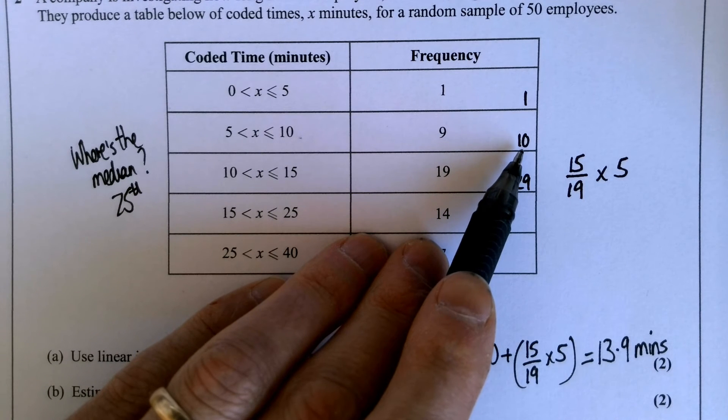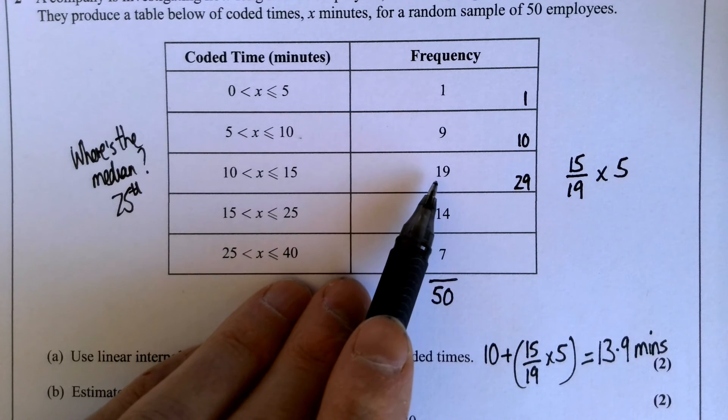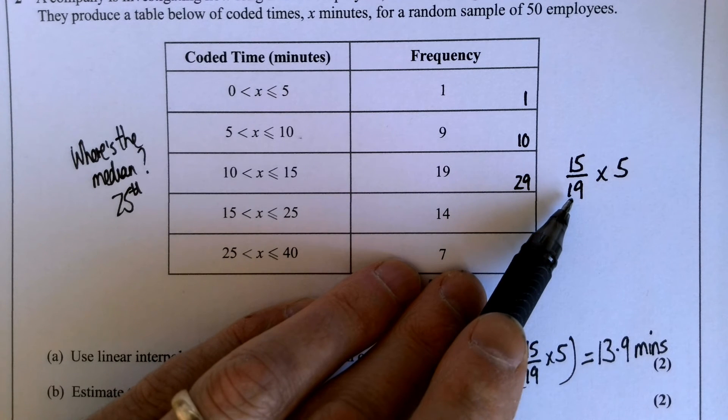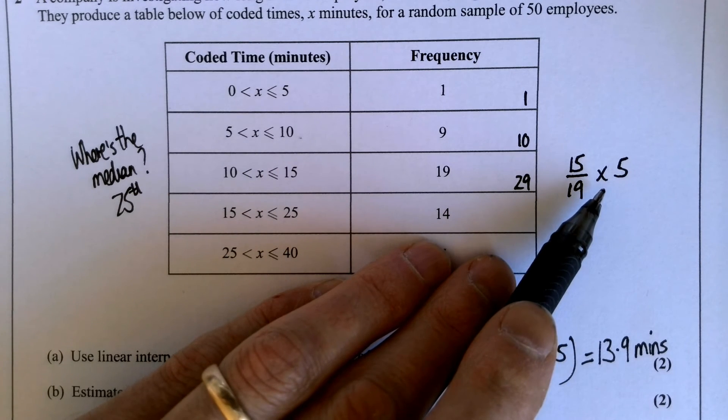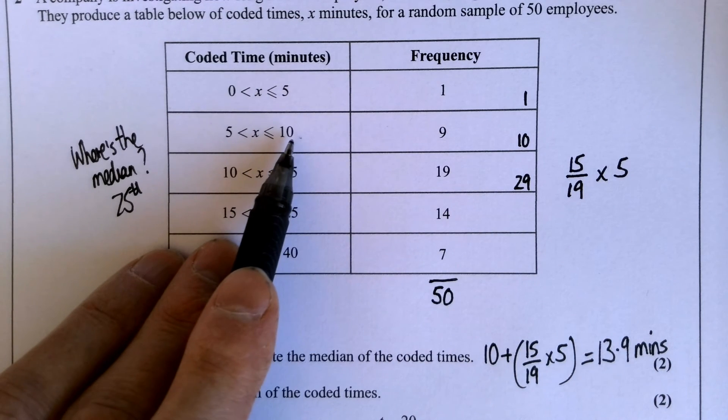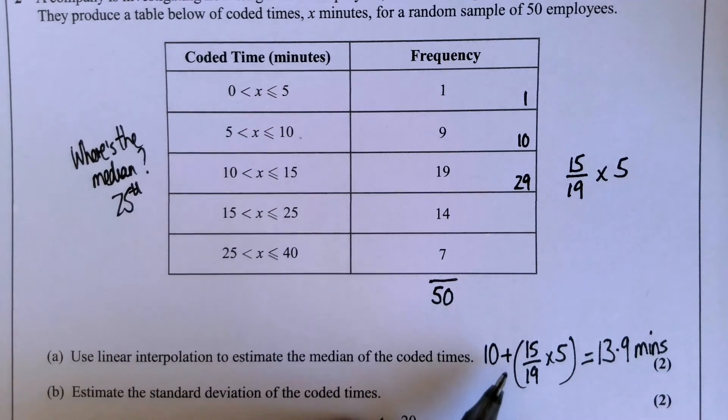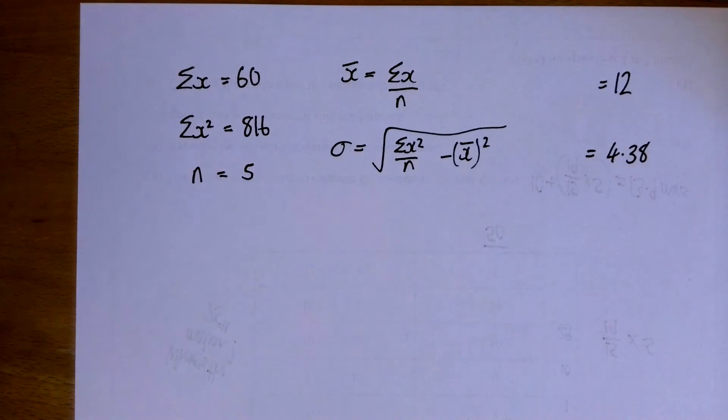By the time I get to 15 minutes, I've counted 29 people, so the median is somewhere in this group. I'm looking for the 25th person, so I need another 15 people after that group, and that group has got 19 people in it. So that's the fraction of the group I need to go through: 15 out of 19. And the group is 5 wide, so to work out the median, it's 10, the end of the previous group, plus that fraction of the second group. And that gives me 13.9. Well done if you got that.